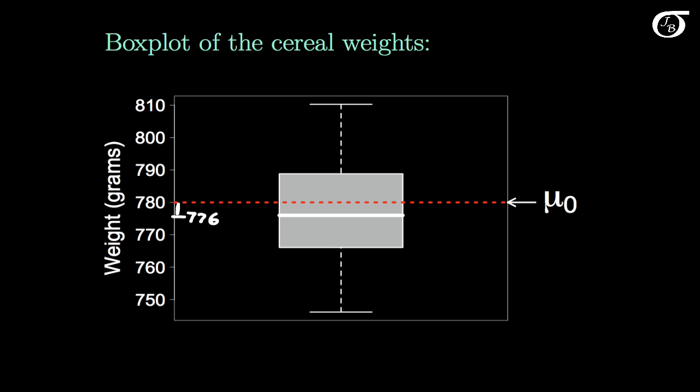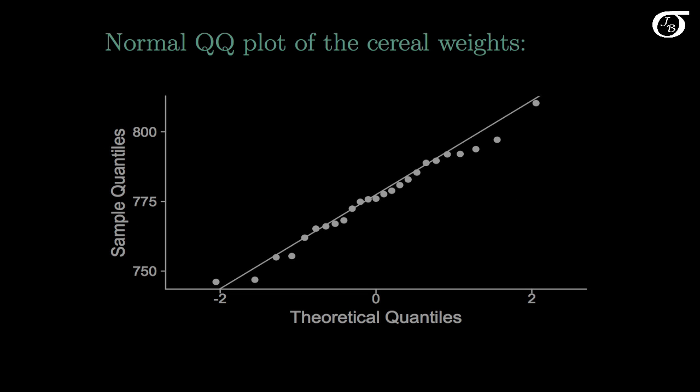The z-test assumes that we are sampling from a normally distributed population, and we should investigate this assumption by plotting a normal quantile-quantile plot of our observed data values. Here's a normal quantile-quantile plot of the weights in the 25 boxes of cereal. Since the dots fall on an approximately straight line, we can say that our sample data is approximately normally distributed. So I'm going to give this the big check mark and say that it's okay to go ahead with our test.